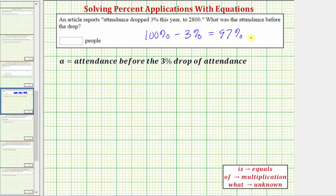Therefore for this problem, we need to answer the question: 2,800 is ninety-seven percent of what amount?